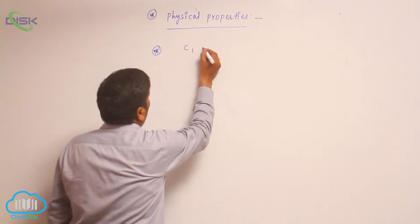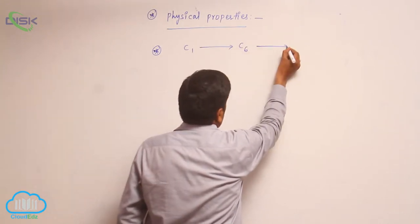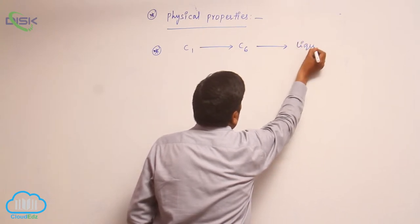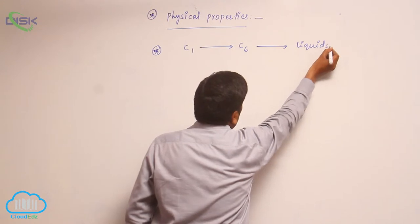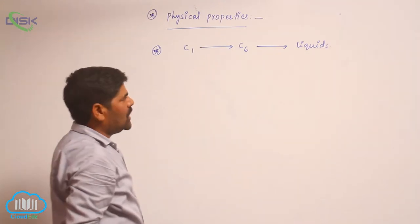C1 to C6 carbon containing compounds are liquids.